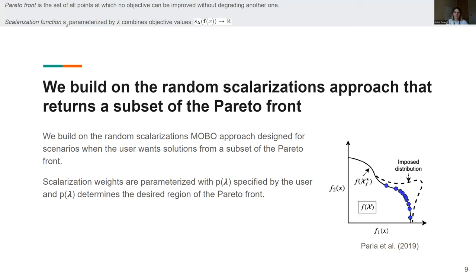And so when performing optimization under this approach, we're going to return the solutions that concentrate in the high probability regions of this imposed distribution, which are shown on the cartoon with the blue dots.